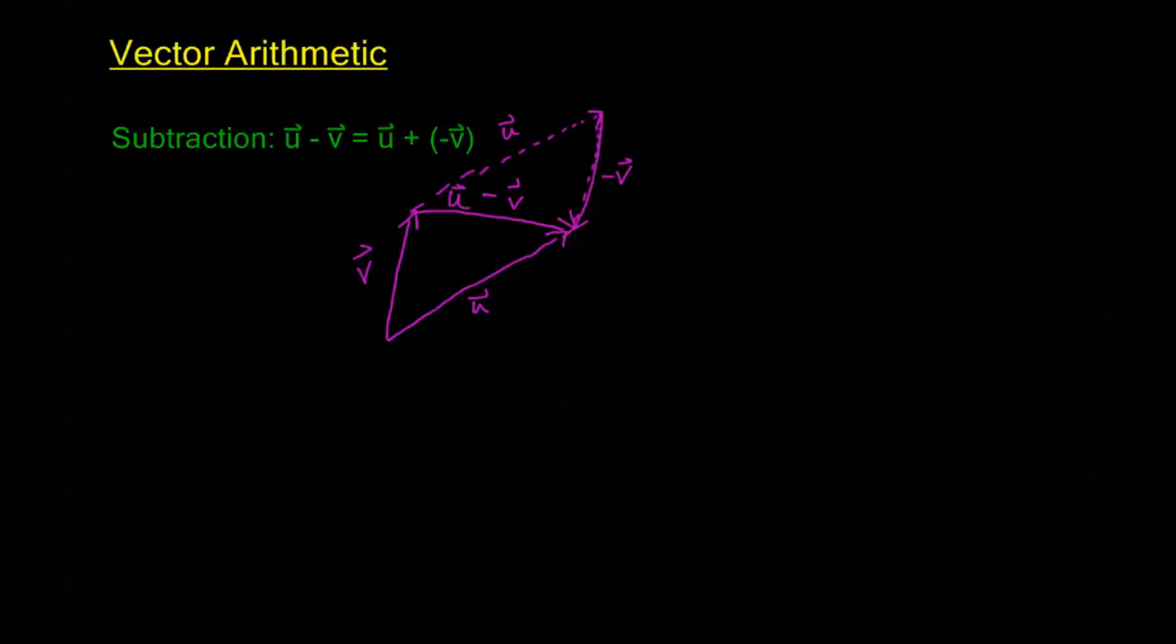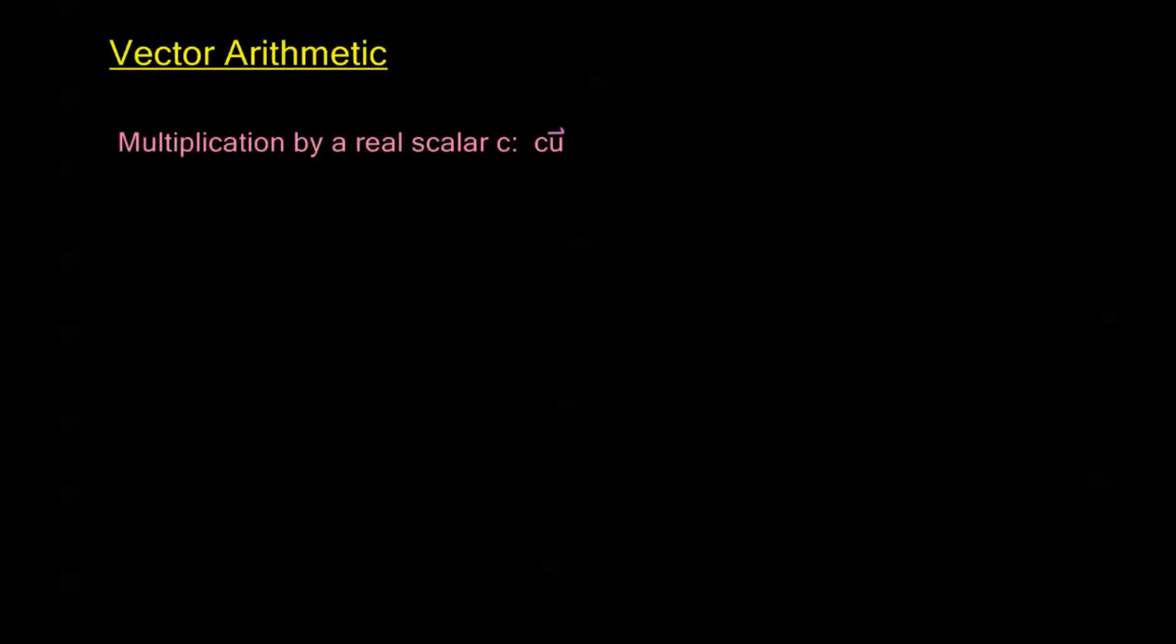So let's see some more examples of this negative v, but with some different scalars. This is our third type of vector arithmetic, and that's multiplication by a real scalar c. So here c is a real number, and I'm multiplying it to some vector u. So let me draw some of these out. Let's say this is my vector u.